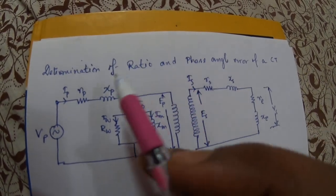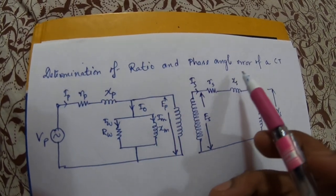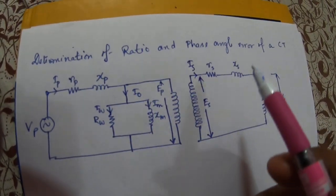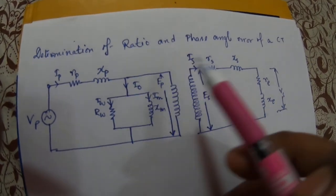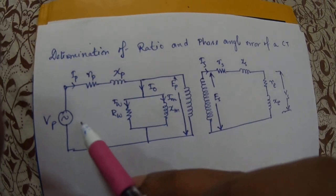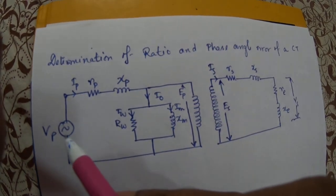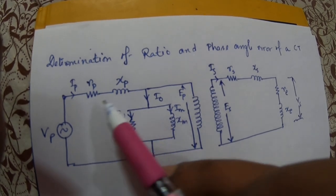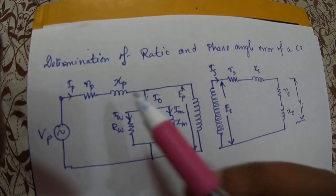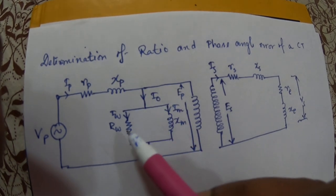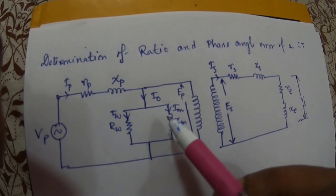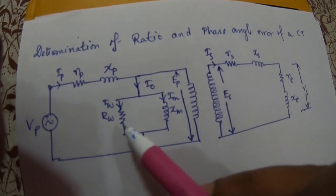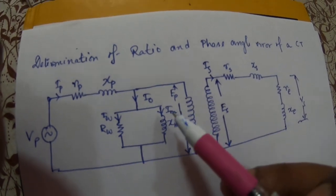Today we will study the determination of ratio and phase angle error of a current transformer. This is the equivalent circuit of a transformer. We have Vp, the supply voltage on the primary side; Ip, the primary current; Rp and Xp are the resistance and reactance on the primary side. I0 is the no-load component, Rw is the working component, and Xm is the magnetizing component. Correspondingly, Iw flows through Rw.